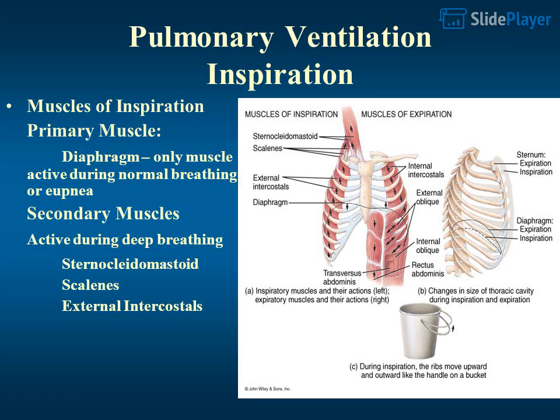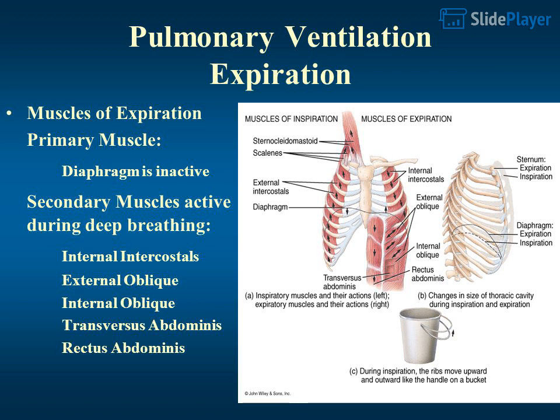Pulmonary ventilation — inspiration: the primary muscle is the diaphragm, the only muscle active during normal breathing or eupnea. Secondary muscles active during deep breathing include the sternocleidomastoid, scalenes, and external intercostals. For expiration, the diaphragm is inactive as the primary muscle, while secondary muscles become active during deep breathing.